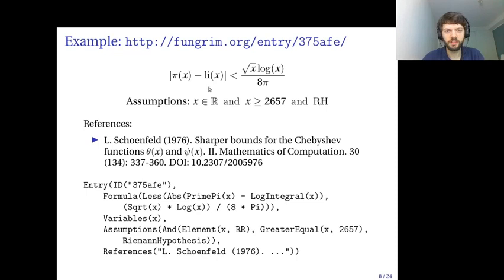Another example, this nice inequality that gives the error bound for approximating the prime counting function by the log integral assuming the Riemann hypothesis. In this case, it's a result that depends on the Riemann hypothesis, and it's explicit in the entry. For this entry, there is also a reference to the literature where you can find a proof for this formula. Most of the entries in Fungrim right now don't have references, but a few of them do, and this is obviously something that can be improved.